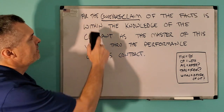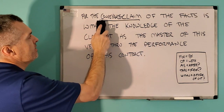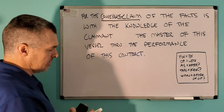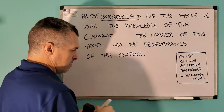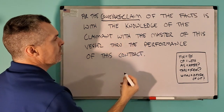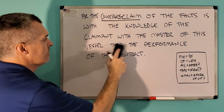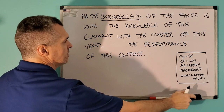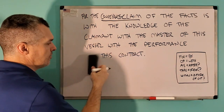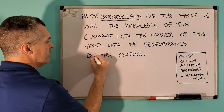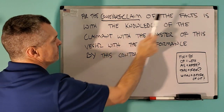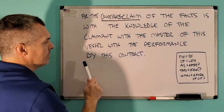So, a quick fix to this: you have for the conveyance claimant the facts — is within. Take that in out. With the knowledge of the claimant, as the master — get rid of the as, just put with. With the master of this vessel through. Take the authority — and the authority is by. So you have: cause, consequence, verb, possessive, consignment, possessive, consignment, possessive, authority.